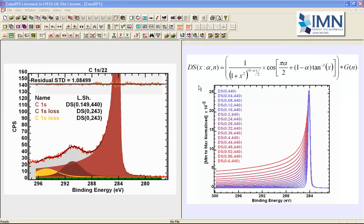In this video, we are going to explore some of the properties of the Doniach-Sunjic line shape. In CASA XPS, the Doniach-Sunjic line shape is introduced into a component using the string DS, open bracket, and then a pair of parameters separated by a comma and then close bracket.